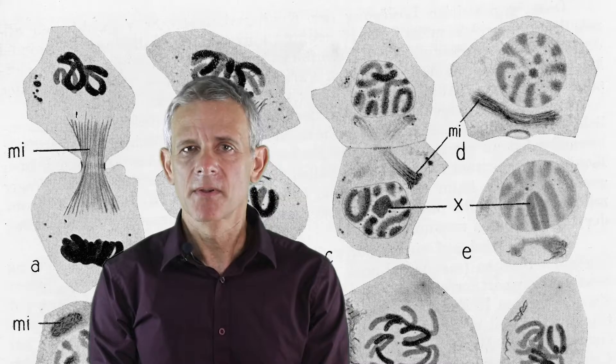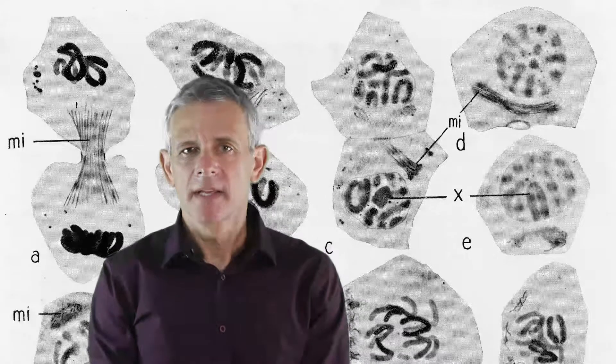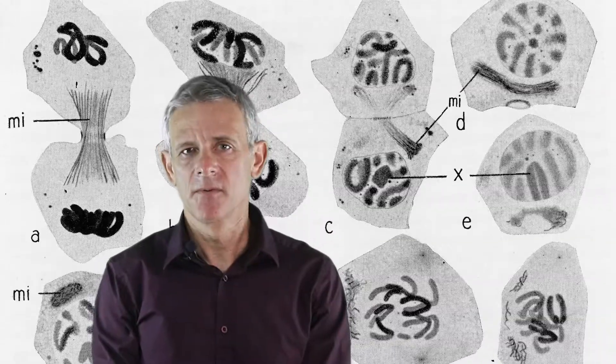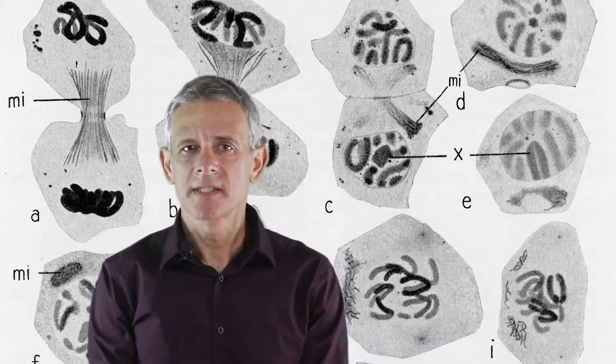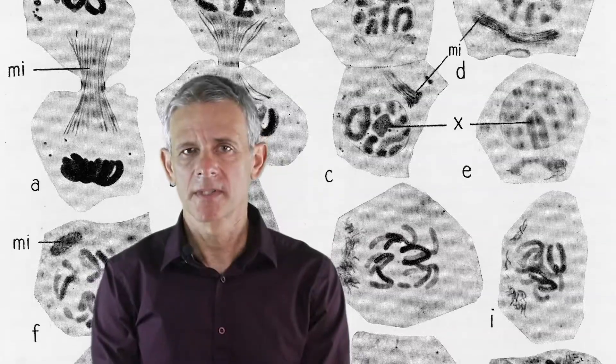During meiosis, cells with two full sets of chromosomes give rise to cells with a single full set of chromosomes. This process requires the sorting and separation of homologous chromosomes.